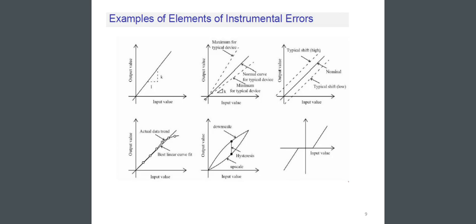At the bottom, the fourth figure is actual data trend and based linear curve fit. In figure five, you can see the downscale, the upscale, and the hysteresis. And the last figure: you only see the input value. So there are six different curves or you can see the six different graphs.